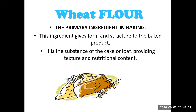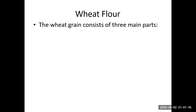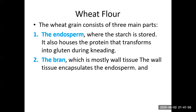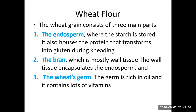To obtain wheat flour, we need wheat grain. The wheat grain consists of three main parts. First is the endosperm, where starch is stored and which also houses the protein that transforms into gluten during kneading. Kneading is the process of preparing dough by adding water to flour. Second is the bran, which is mostly wall tissue that encapsulates and insulates the endosperm — it forms the outer portion of the grain.